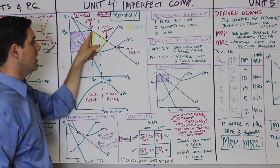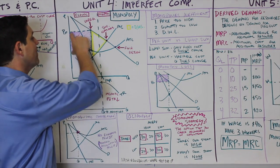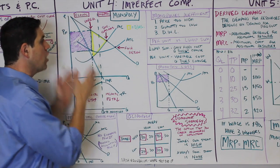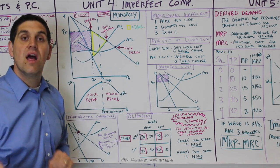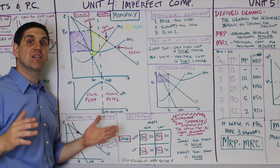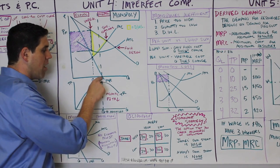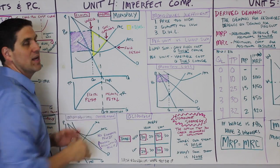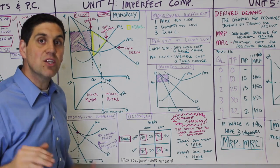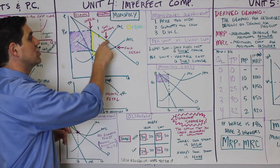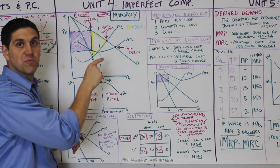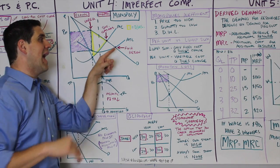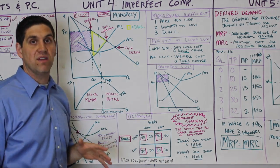In this graph there's a box of profit — firms cannot enter because of high barriers, so this is both the short-run and long-run graph. The AP test might ask about maximizing total revenue, which is when MR hits zero. This is the elastic and inelastic range of the demand curve. If the government regulates a monopoly, there's the socially optimal point — where society wants produced with no deadweight loss — or they can set a price ceiling at fair return where the firm breaks even with no economic profit.